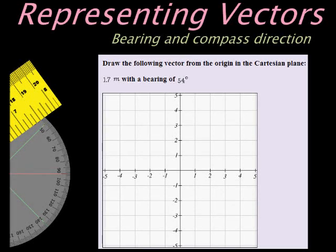Here's an example. Draw the following vector from the origin on the Cartesian plane. They give us the vector 1.7 meters with a bearing of 54 degrees.